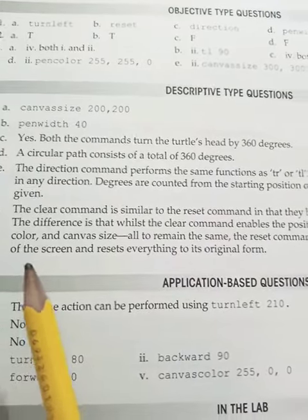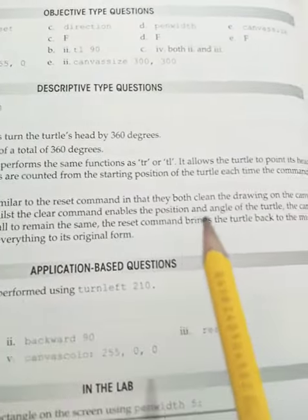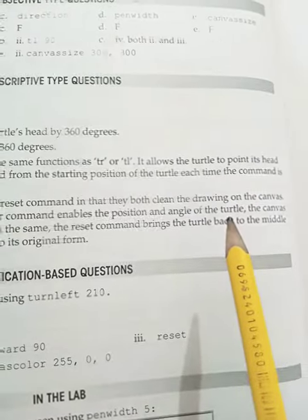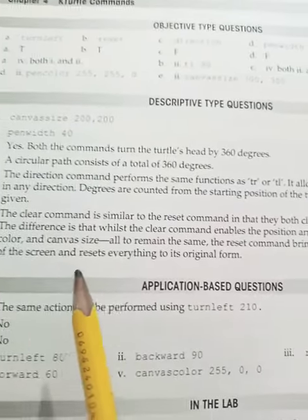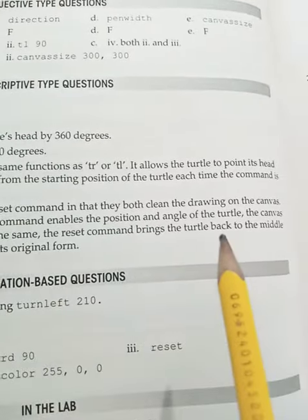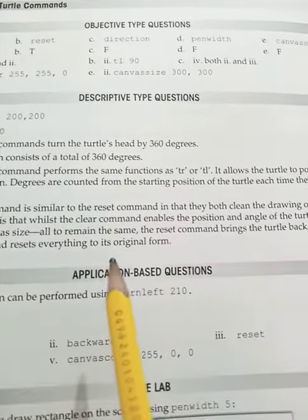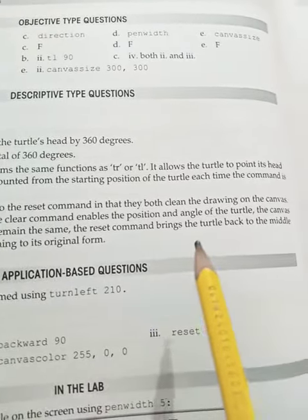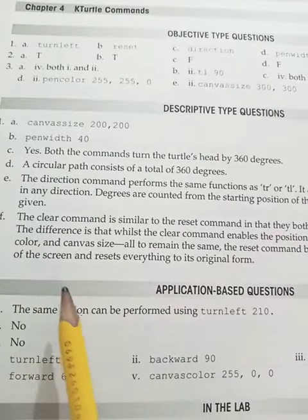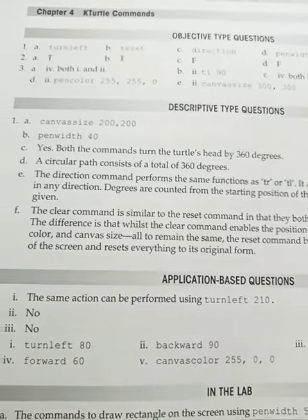The answer is the clear command is similar to the reset command in that they both clean the drawing on the canvas. The difference is that the clear command enables the position and angle of the turtle, the canvas color, and canvas size all to remain the same. The reset command brings the turtle back to the middle of the screen and resets everything to its original form.